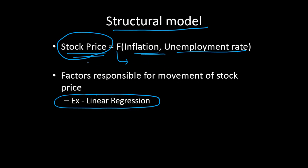In a structural model we have the concept of a dependent or response variable and independent or exogenous variables. In a time series model, there is no such concept of factors or exogenous variables — only one variable is involved, and we model it based on its own past values. In a structural model, there is a proper structure where the dependent variable is a function of a set of independent variables.